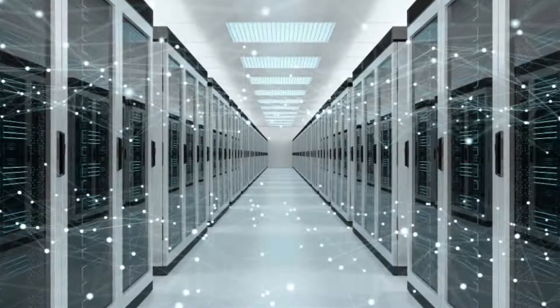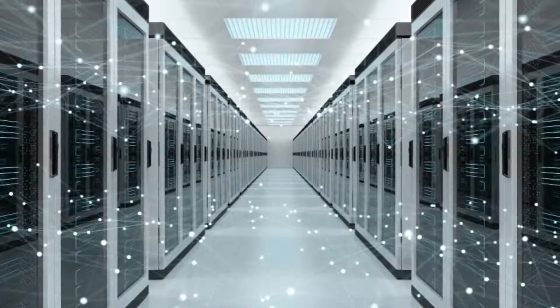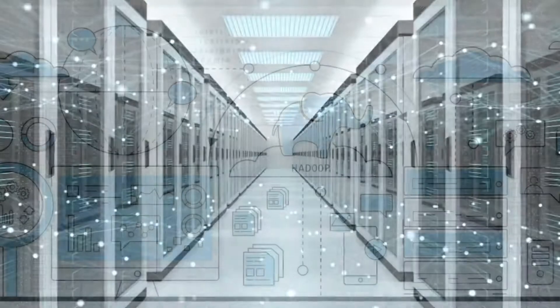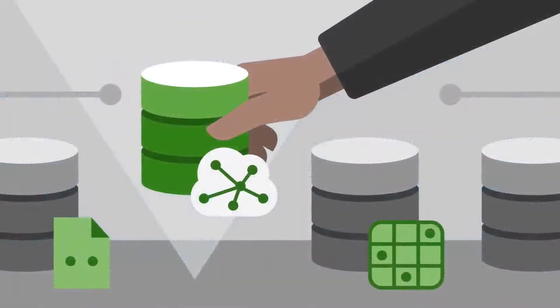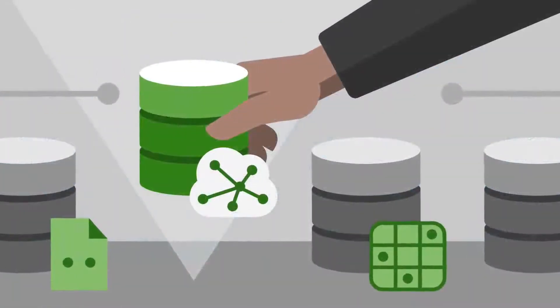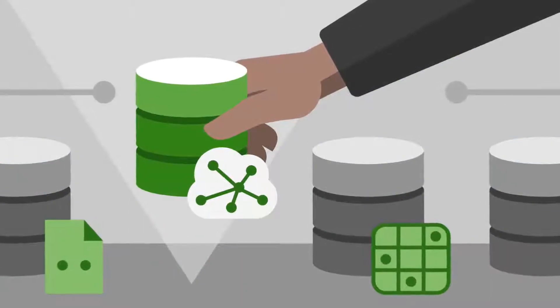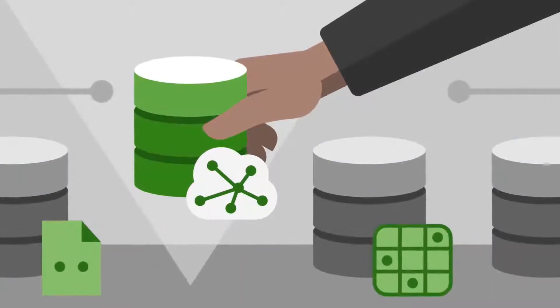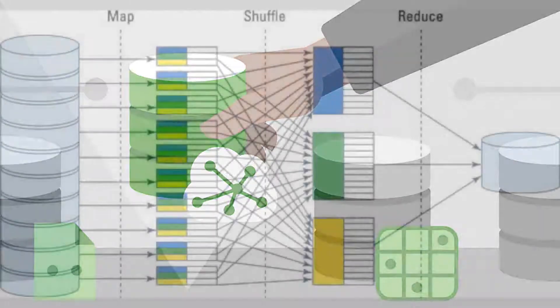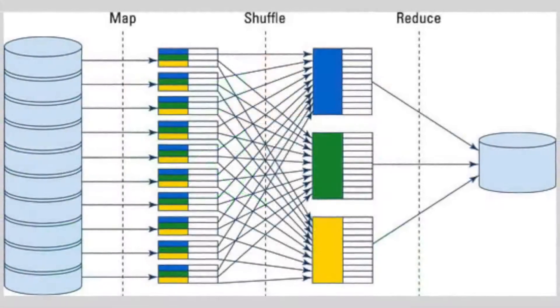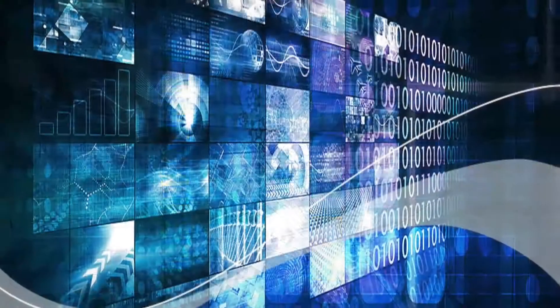The next important trend is Hadoop. Hadoop optimizes the data warehouse environments. This is the open source environment. The open source Hadoop program with its distributed file system called HDFS and parallel MapReduce resource conditions extends the data warehouse environment significantly.